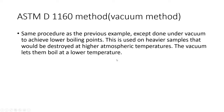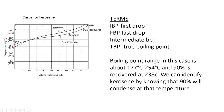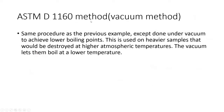The second method is ASTM D1160, which is essentially the same procedure as D86 except it's done under a vacuum. The main reason for using a vacuum is it allows us to boil fluid at a lower temperature. This is used on heavier samples that would be destroyed at the higher atmospheric boiling point temperatures. The vacuum lets them boil at a lower temperature so we don't destroy them.